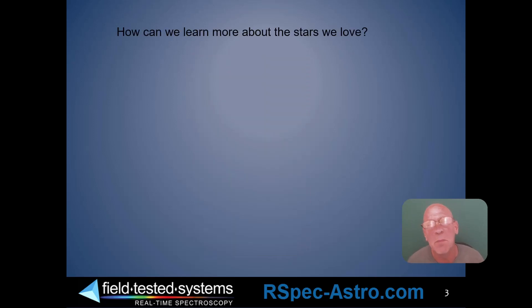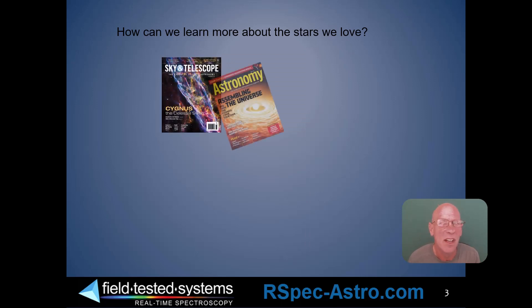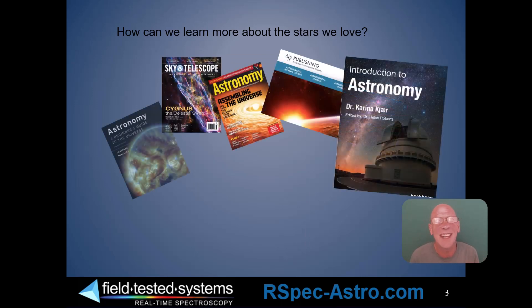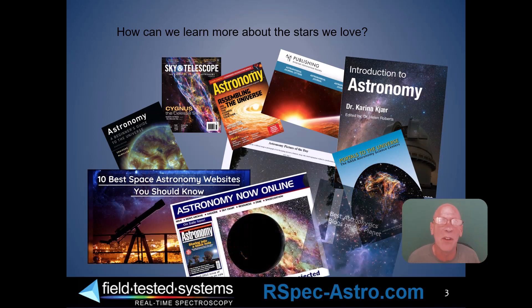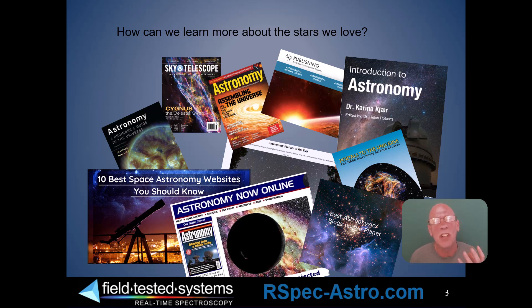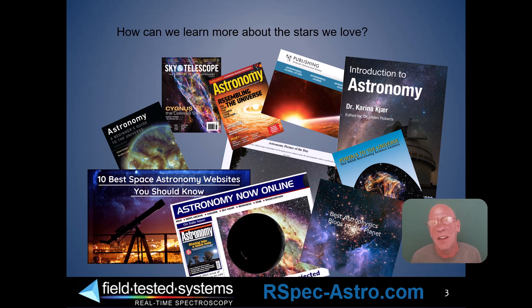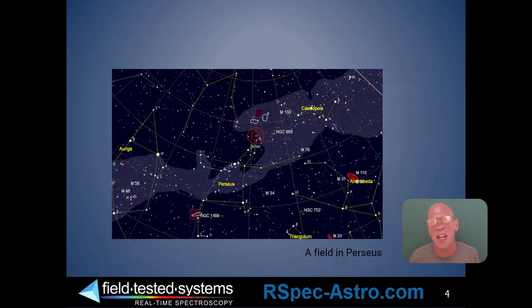My learning curve was a little bit disappointing at first. I read all sorts of online sources, texts, and magazines, but a lot of it just didn't come together and I didn't remember a lot of it. I don't have a degree in astrophysics — I'm not a scientist. I just wanted to understand more about the beautiful skies that we observe. I found that spectroscopy allowed me to do that. So I'm going to show just three quick examples today.